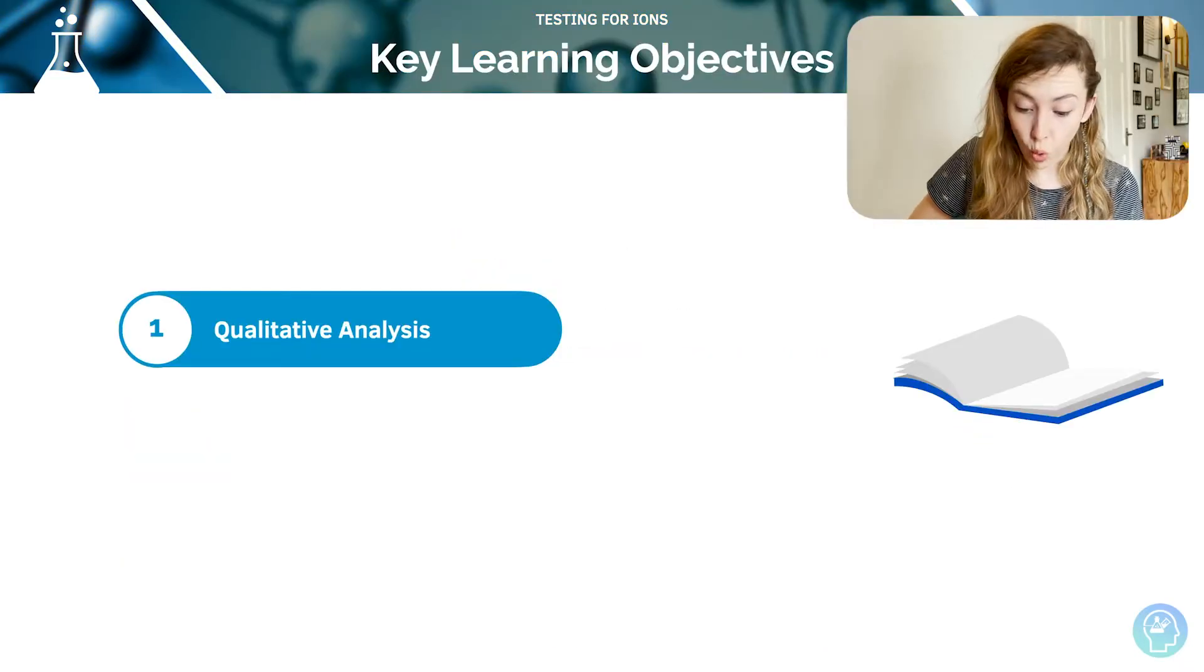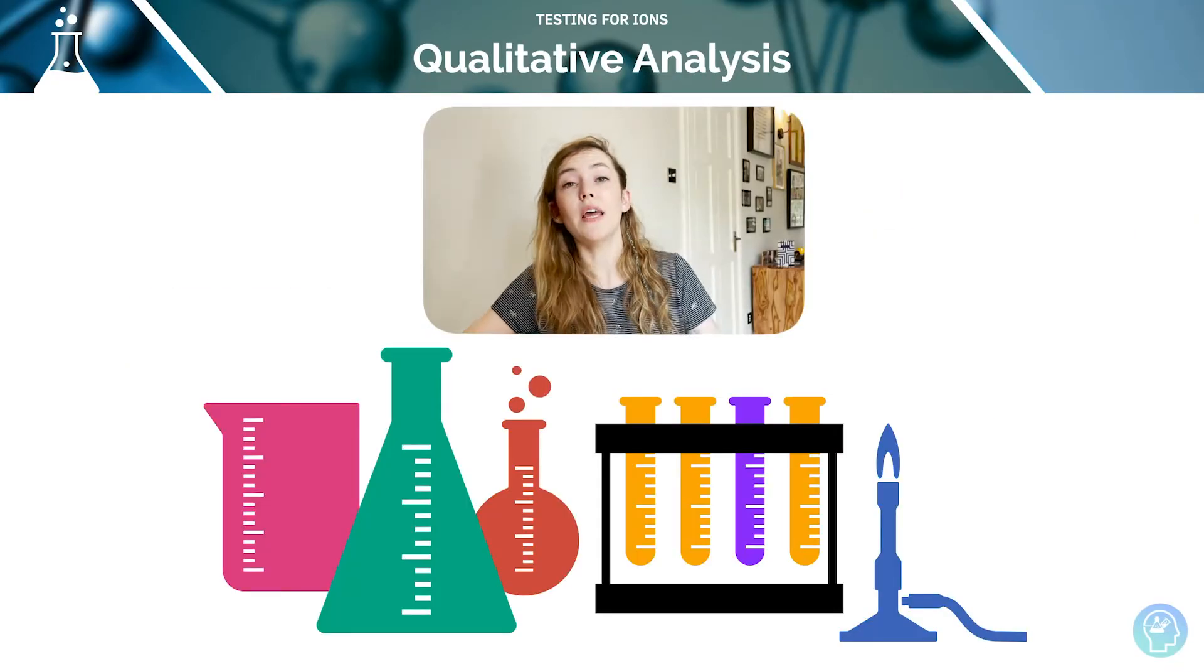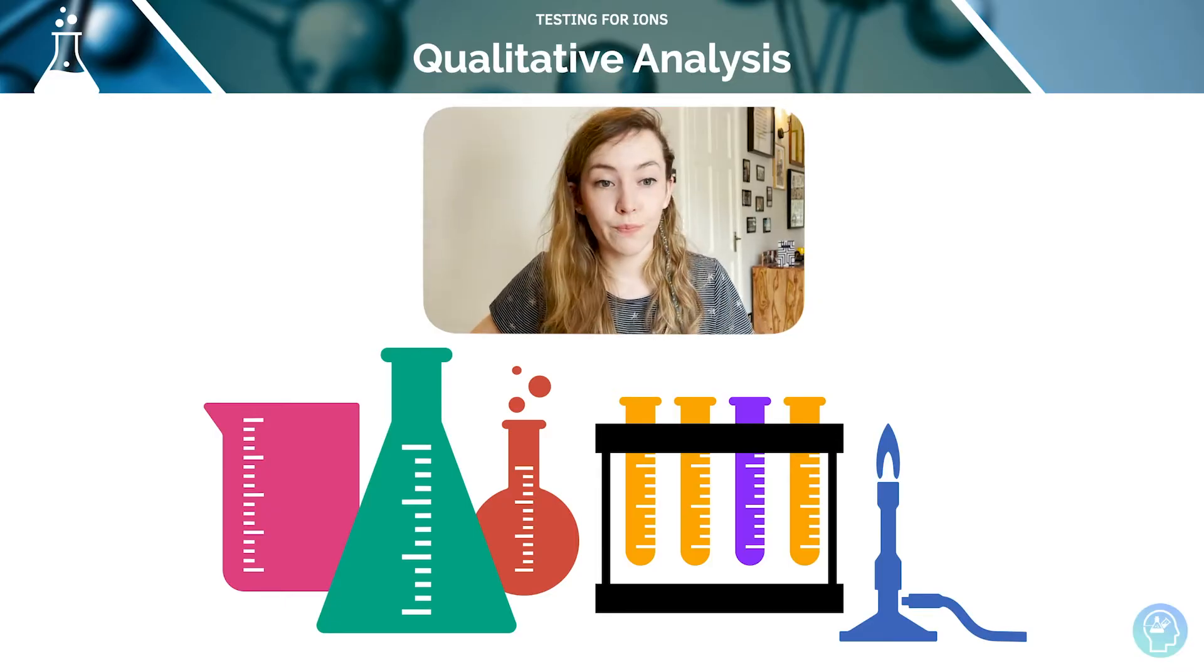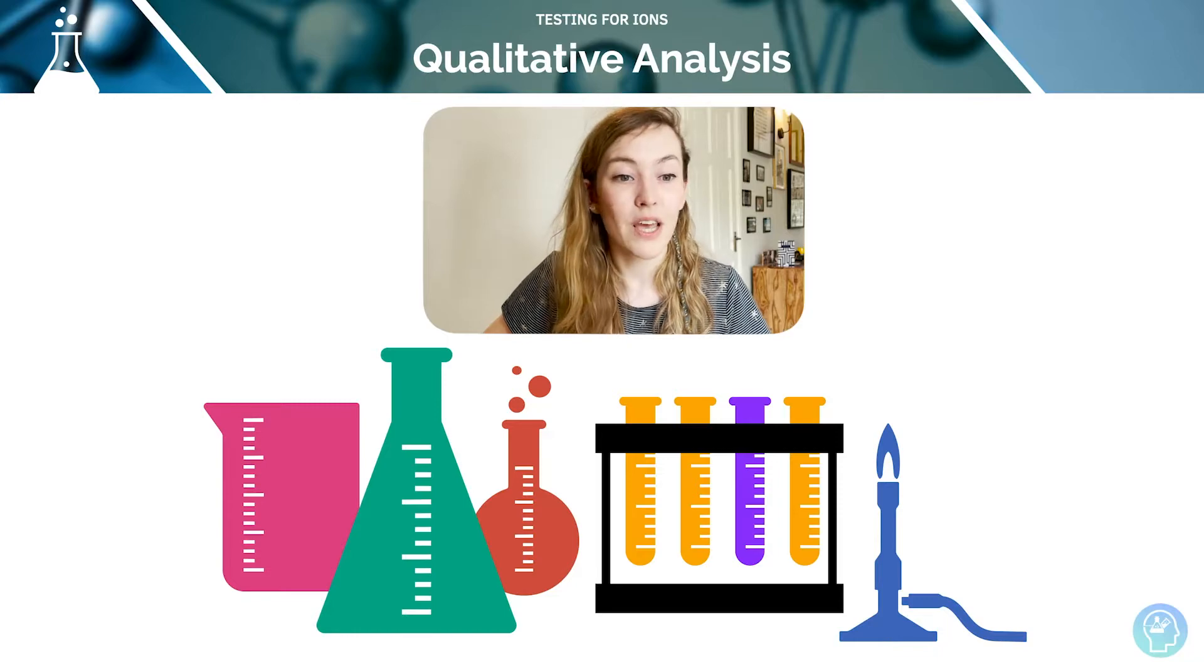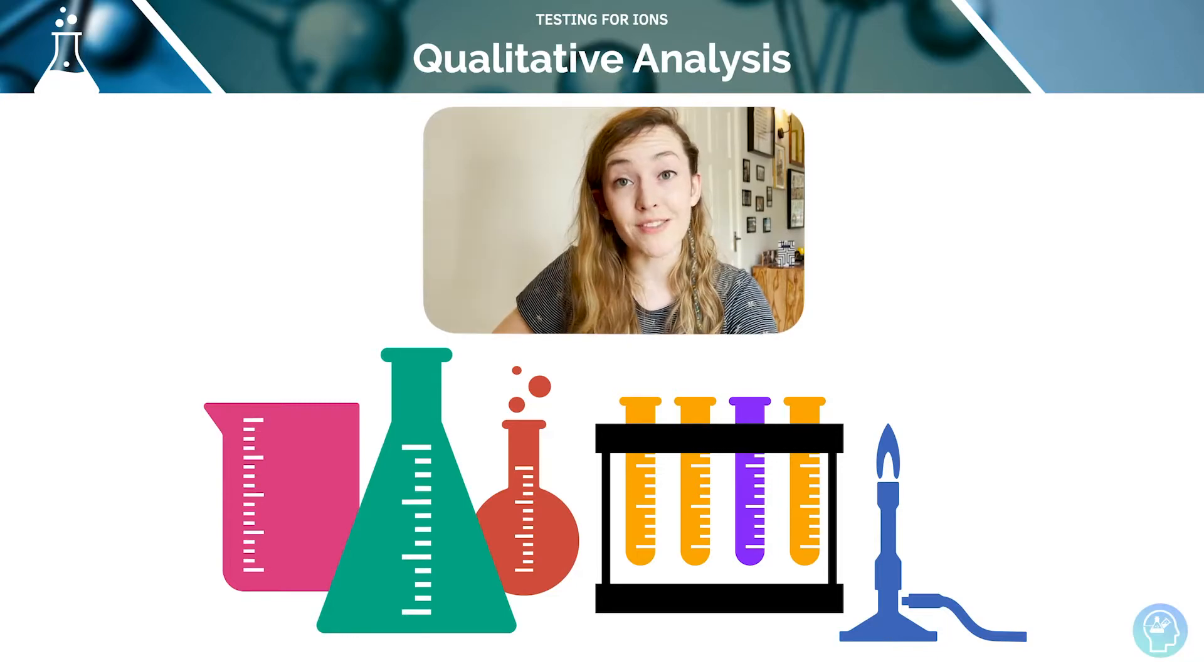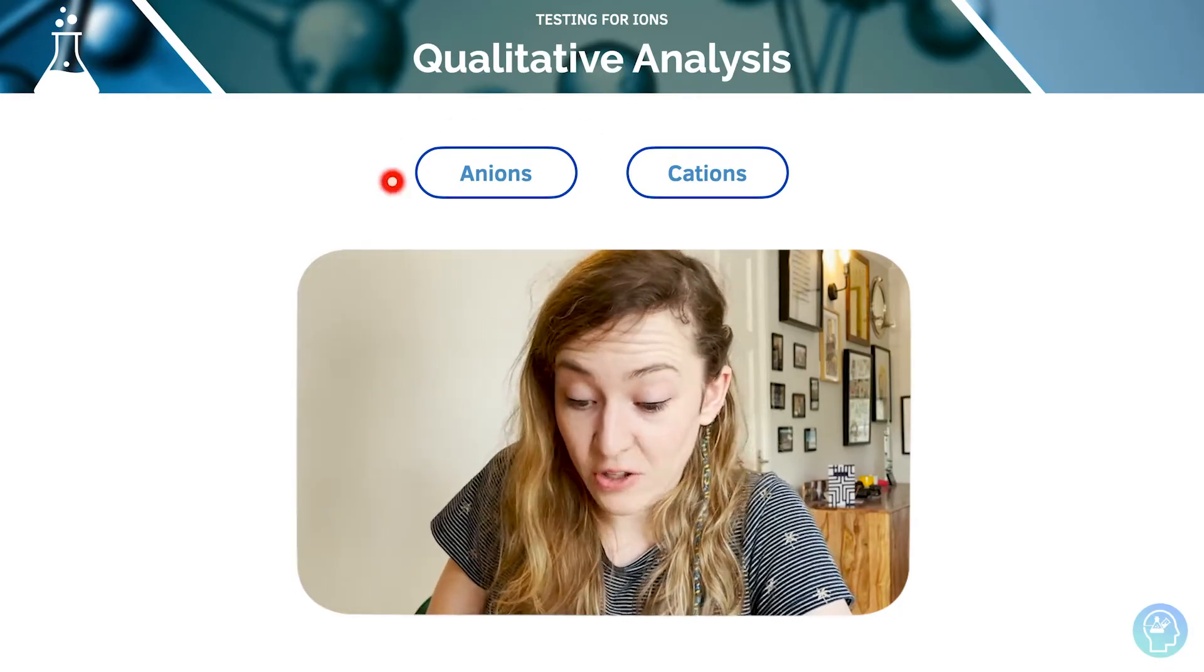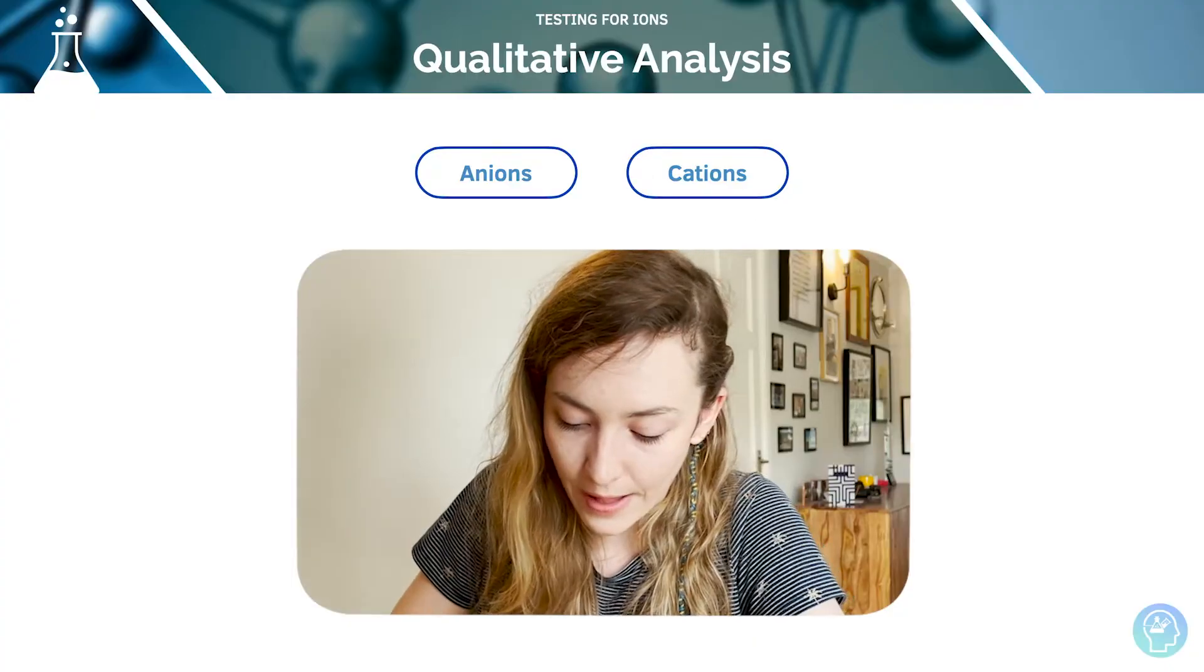Now we're going to look at qualitative analysis as well. We can find out and identify what is in an unknown solution, which compounds are present there, by systematically carrying out qualitative tests for the presence of different ions. We can look for anions and we can look for cations as well.